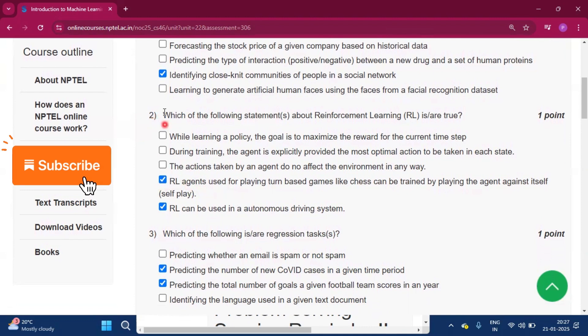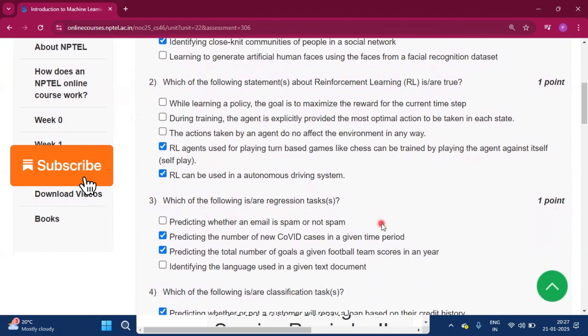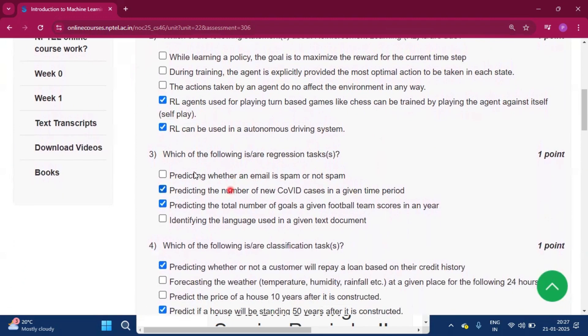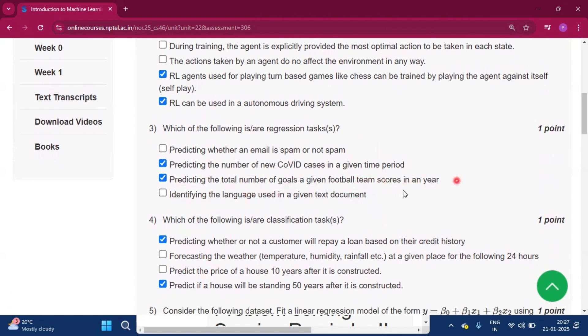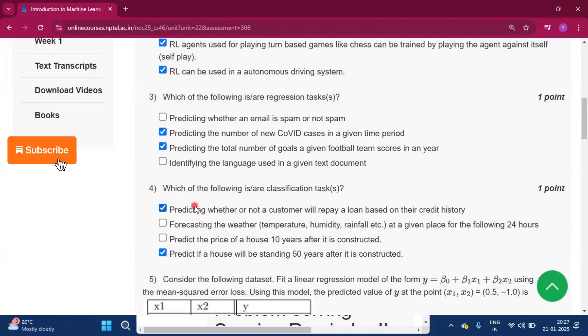For question number two, these two are the answers. Which of the following is or are regression tasks? Predicting the number of new COVID cases in a given time period and predicting the total number of goals in a given football team's course in a year.